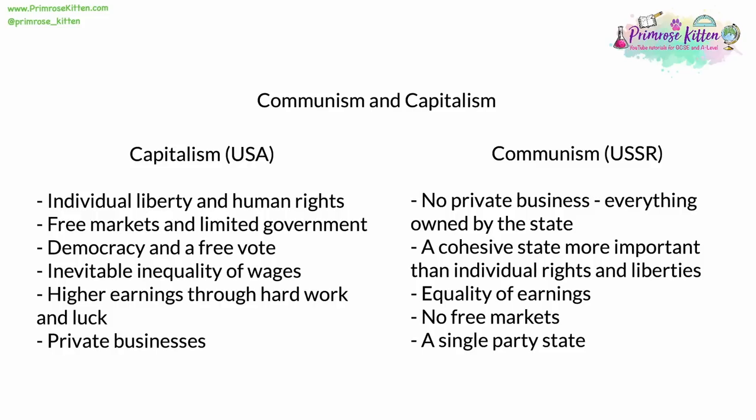Communism was found in the USSR and much of Eastern Europe, and latterly also in North Korea, China, and Vietnam. Under a communist system, there was no private business — everything was owned by the state, by the government and by the nation. The idea was for a cohesive state more important than individual rights and liberties. By sacrificing these rights and liberties, equality and an advanced living standard for all could be achieved. There was therefore, theoretically at least, an equality of earnings and wealth, with no free markets, and with the Communist Party as the only party of government.